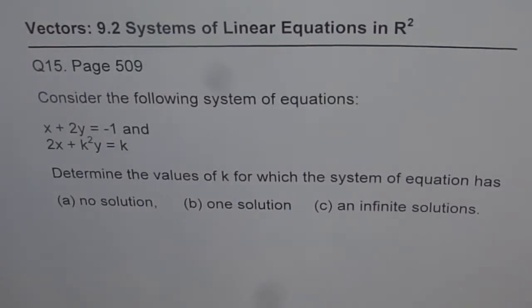Here is question number 15 from page 509. A student has requested and wants to understand the solution. Now the question is, consider the following system of equations: x plus 2y equals minus 1 and 2x plus k squared y equals k. Determine the value of k for which the system of equations has no solution, one solution, or infinite solutions.